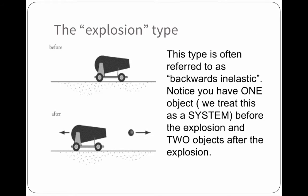The third kind is the explosion type. In this, it's often referred to as backward inelastic. Notice you have one object before the explosion and two objects after the explosion. The cannon ball is inside the cannon before and outside after.